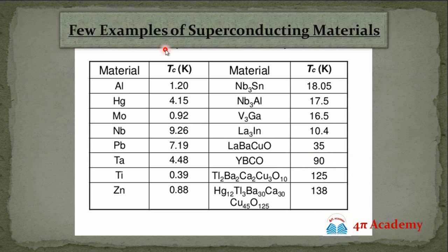Here are a few examples of superconducting materials for reference. We have some alloys and some metals which show superconductivity. Common materials include aluminum, mercury, molybdenum, and lead (Pb). The critical temperature for aluminum is 1.20 Kelvin, and so on. You can also see some alloys in this list. One important thing you can observe from this table is that normally the critical temperature of these substances is very, very small.